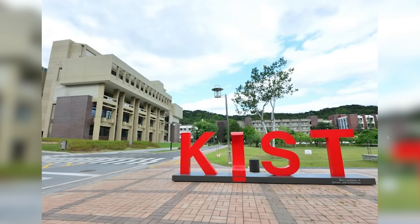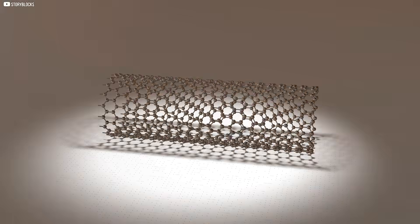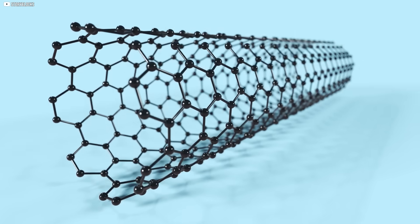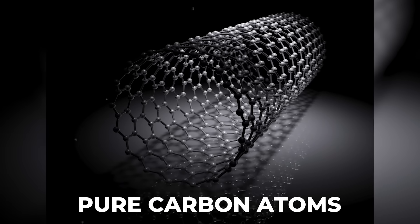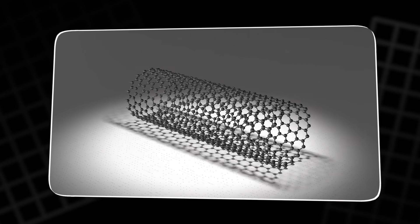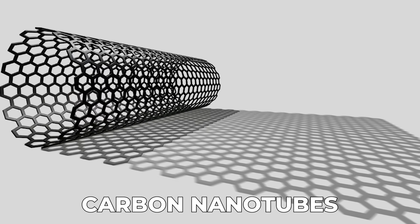But the team at KIST believed there was room for something better, something lighter, something fundamentally different. Their focus turned to carbon. Not the dull gray graphite you find in a pencil. This was carbon at the nanoscale. Imagine tubes made of pure carbon atoms, each one tens of thousands of times thinner than a human hair, yet stronger and more conductive than most materials we use today. These were carbon nanotubes.